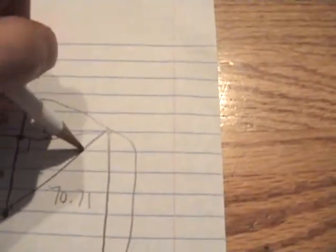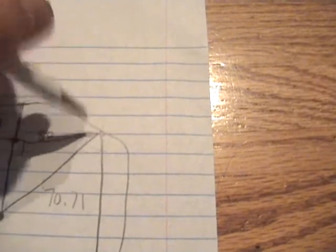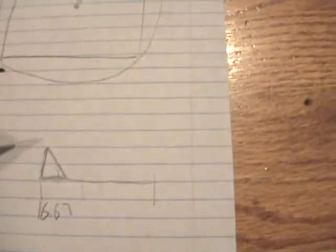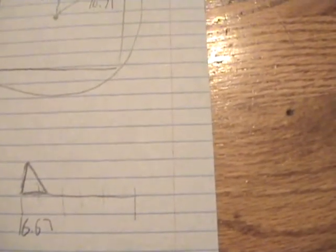We need to measure it diagonally because that's how it would be sticking out. So we would do Pythagorean theorem for 16.67 going two ways, and then the diagonal would be - math is over here - 23.57. Since 23.57 is more than 20.71...